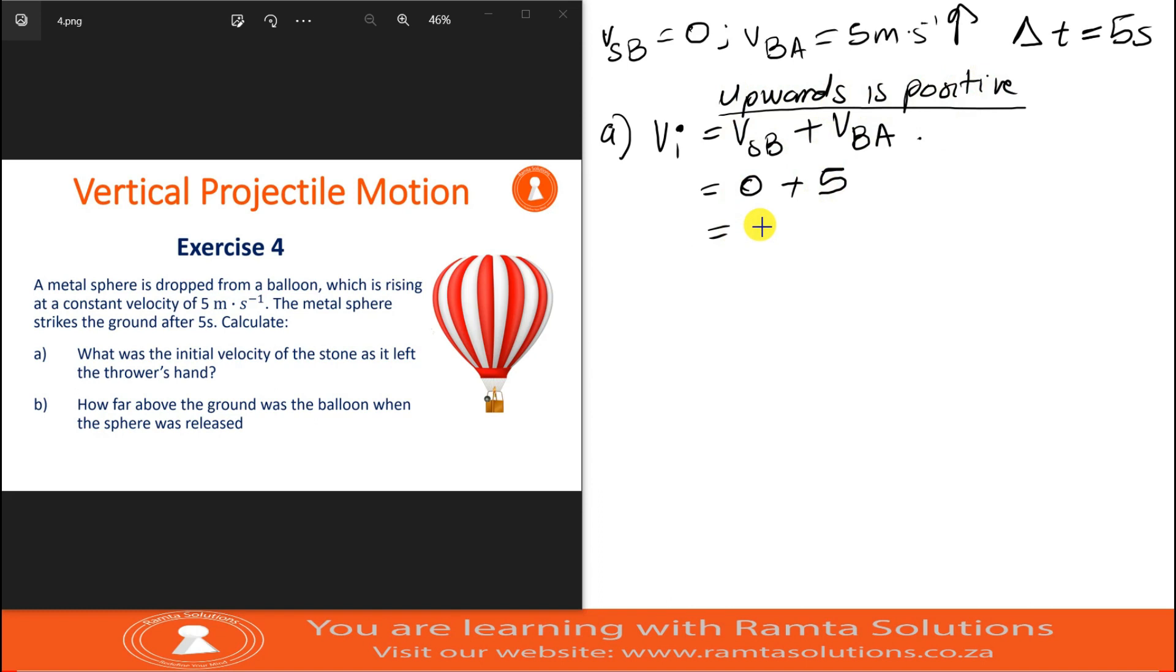Therefore, initial velocity of the stone, or metal sphere, its initial velocity is zero plus five, which is five meters per second upwards.